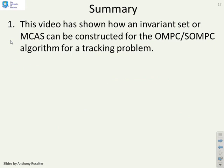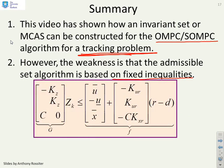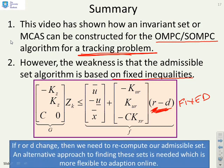So in summary, this video has shown how an invariant set, or MCAS, can be constructed for OMPC or SOMPC, and specifically for a tracking problem. However, there is a weakness, and that's the admissible set algorithm is based on fixed inequalities. These are the fixed inequalities that we used. In particular, it assumed that R - D was fixed. And in practice, of course, they will not be fixed. Even if the set point R was fixed, the estimate for D would change every sample. So if R or D change, then we would need to recompute our admissible set. Therefore, we need some alternative for finding these sets which is more flexible to deal with the online variations that will happen in practice.